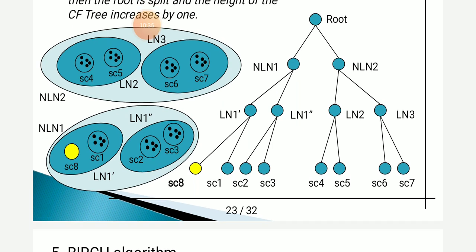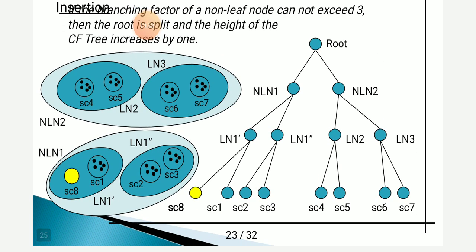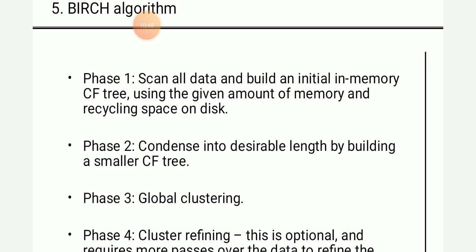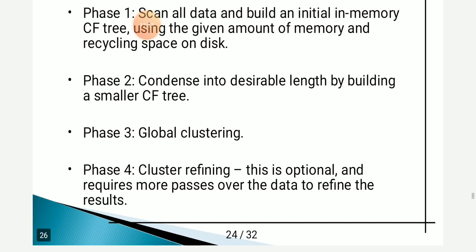In another example, when the CF tree size increases by one, we split the root, increasing the height of the CF tree by one. The BIRCH algorithm has four important phases. In phase 1, we scan all the data points and build an initial in-memory CF tree using the given amount of memory and recycling space on disk. In phase 2, we rebuild the tree and condense the CF tree into a smaller one. In phase 3, we perform global clustering. In phase 4, optional cluster refining is done, requiring more passes over the data to refine the results.